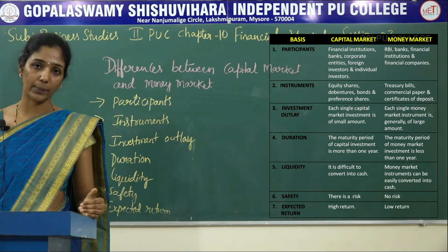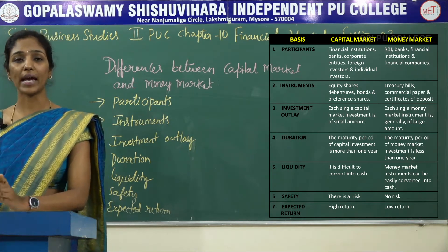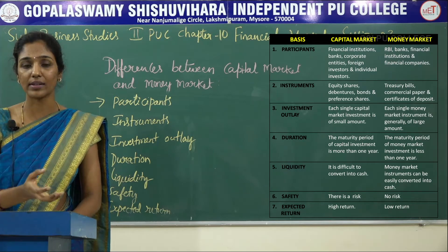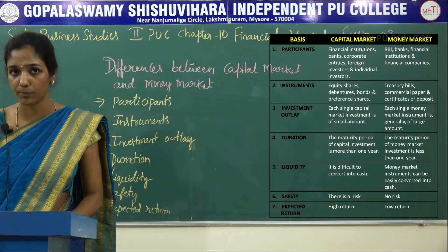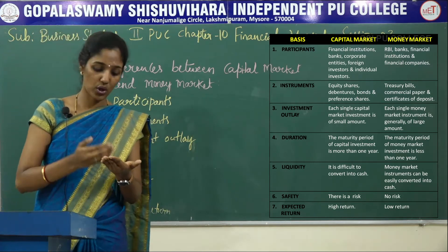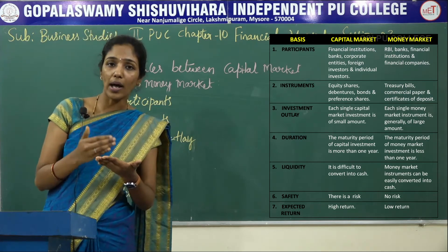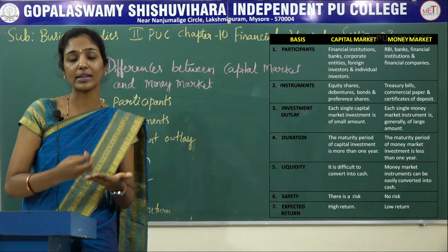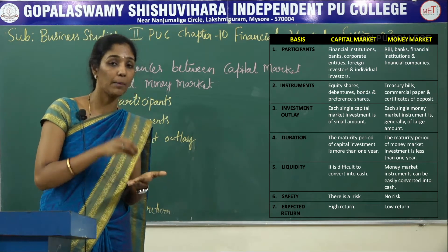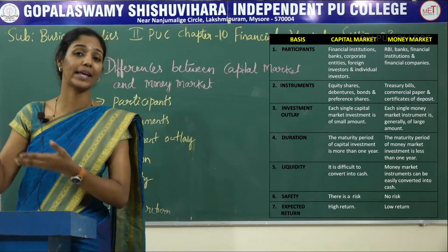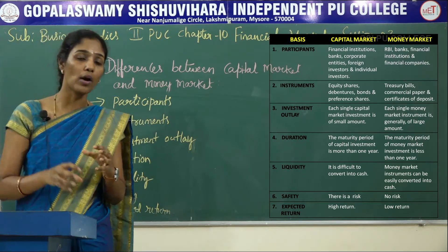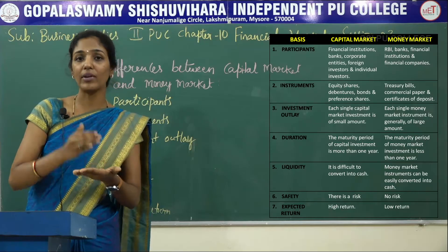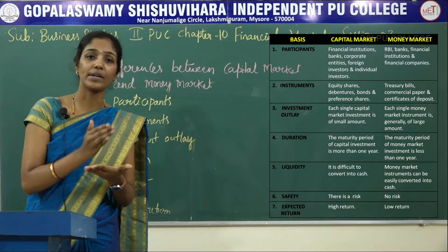The next difference is investment outlay. The capital market encourages people to invest their small savings. Shares and debentures are available at low prices, so people with small savings can invest in the capital market. But this is not possible in the money market because the value of instruments is comparatively very high.